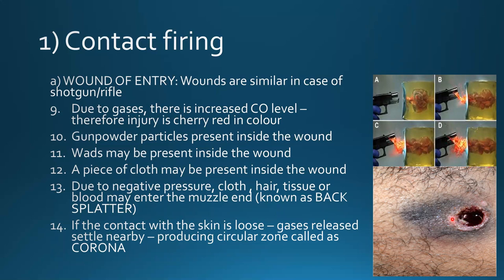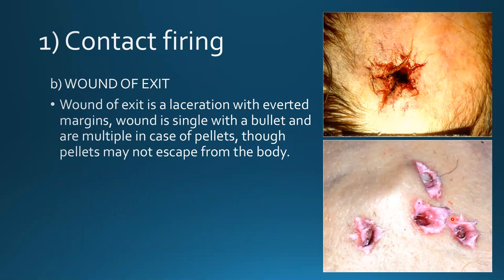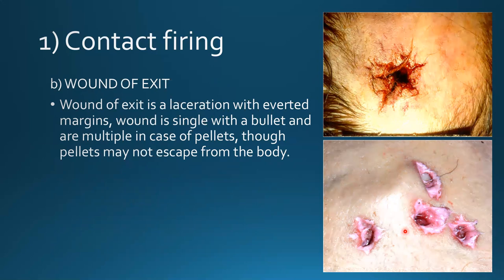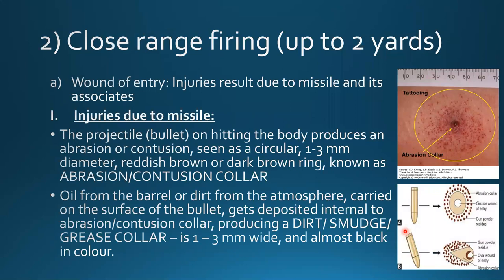If the contact skin is loose, gases released settle nearby, producing a circular zone known as a corona. The wound of exit in contact firing has the shape of a laceration with averted margins. With a bullet the wound is single; with pellets it may be multiple. Sometimes pellets may not escape from the body due to decreased energy and may be found inside the body.